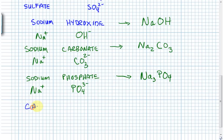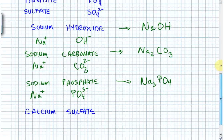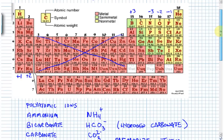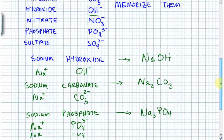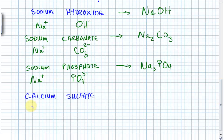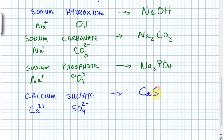Calcium sulfate: calcium is in column 2, so it forms a plus 2 ion. Sulfate, from memory, is SO₄²⁻ — minus 2. That's a nice match: one calcium with plus 2 balances one sulfate with minus 2. The formula for calcium sulfate is CaSO₄ — one calcium, one sulfate.